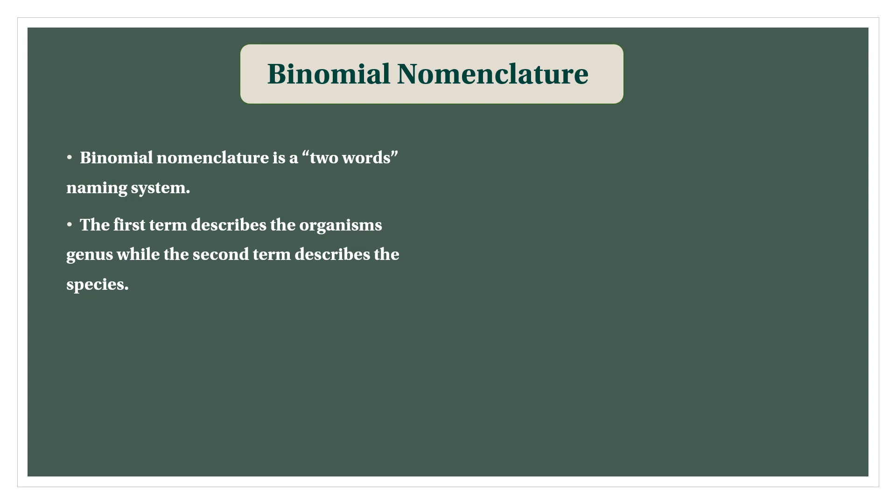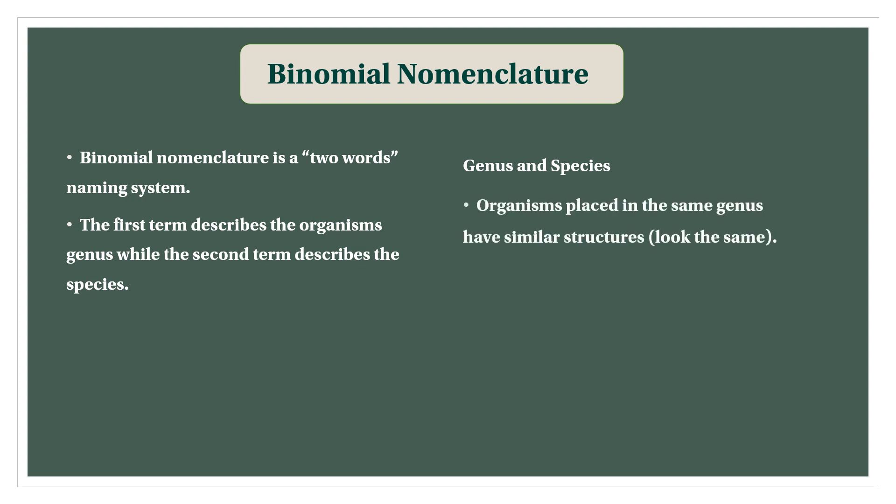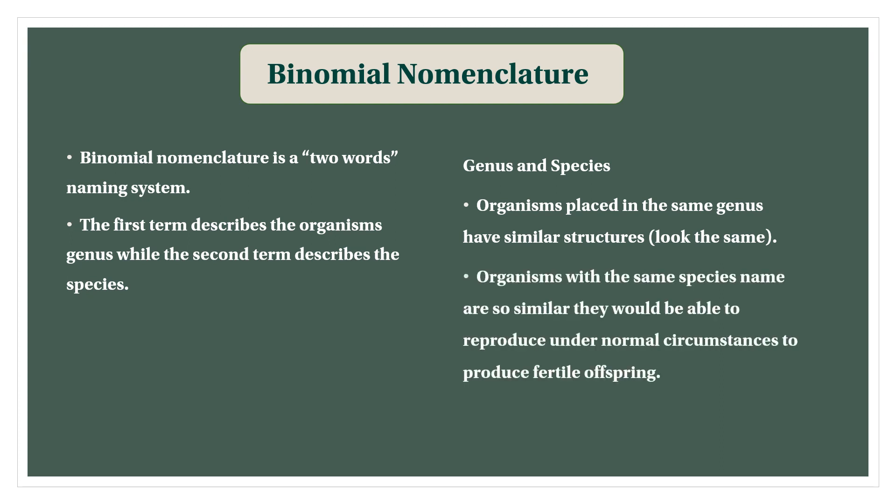Binomial nomenclature is a two-word naming system. The first term describes the organism's genus, while the second term describes the species. Organisms placed in the same genus have a similar structure and look the same. Organisms with the same species names are so similar they would be able to reproduce.